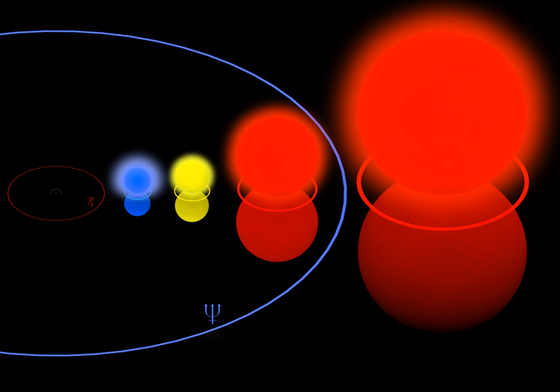A hypergiant is among the very rare kinds of stars that typically show tremendous luminosities and very high rates of mass loss by stellar winds. The term hypergiant is defined as luminosity class 0 in the MKK system. However, this is rarely seen in the literature or in published spectral classifications, except for specific well-defined groups such as the yellow hypergiants, red supergiants, or blue supergiants with emission spectra.